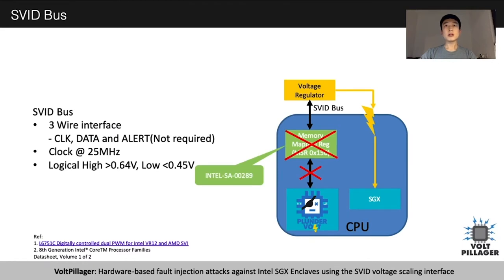After the PlantVolt attack was discovered, Intel quickly published a security advisory and disabled its software interface. However, there is still a physical connection between the CPU and the voltage regulator. So we started to think: maybe we can take control of this physical connection to control the voltage regulator and change the voltage of the CPU. So we started to look into this interface.